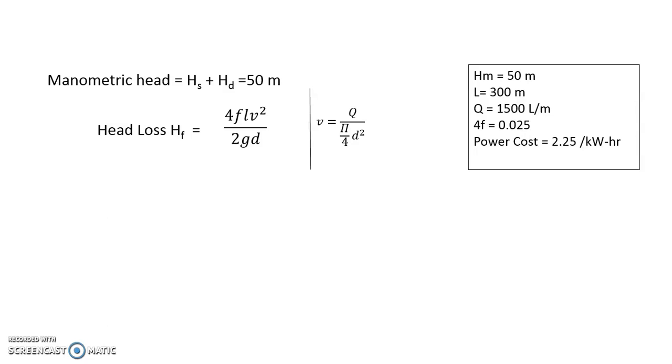Hence v² becomes Q² by (π/4)² into d² to the power 2, so it is d to the power 4. And there is one more d which is existing here. So if I substitute v equals to Q by π/4 d² instead of v here, hf becomes 4fL Q² by 2gd⁵ into (π/4)².